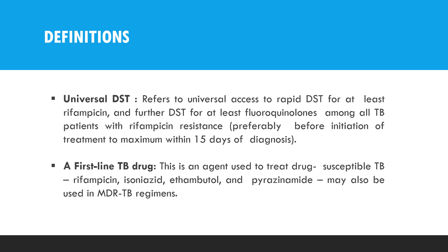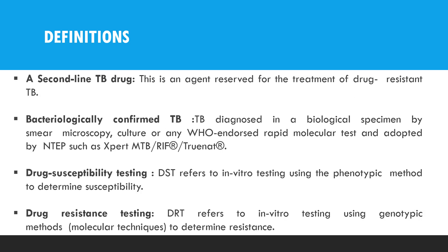Universal drug sensitivity testing refers to universal access to rapid drug sensitivity testing for at least rifampicin and further drugs, and DST for at least fluoroquinolone drugs among all TB patients with rifampicin resistance, preferably before initiation of treatment or maximum within 15 days of diagnosis. First-line anti-TB drugs are used to treat drug-sensitive TB, such as rifampicin, isoniazid, ethambutol, and pyrazinamide. They may also be used in multi-drug resistant tuberculosis regimens. Second-line drugs are used for the treatment of drug-resistant tuberculosis.